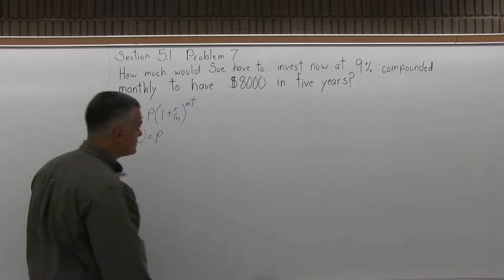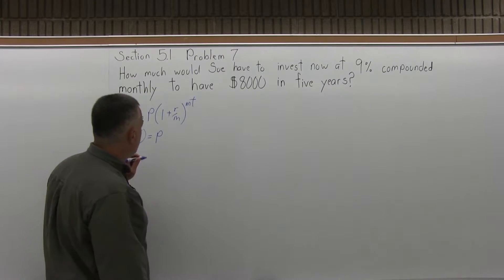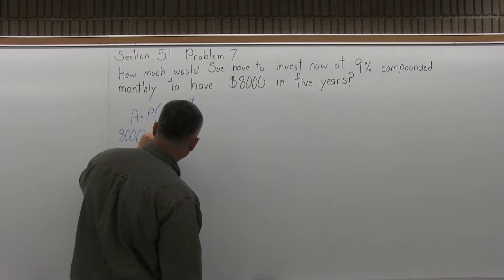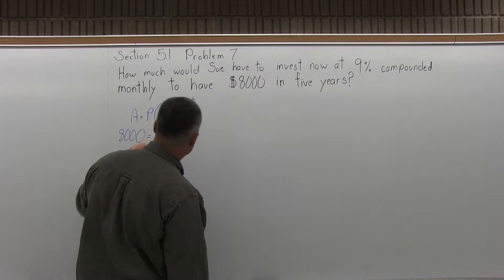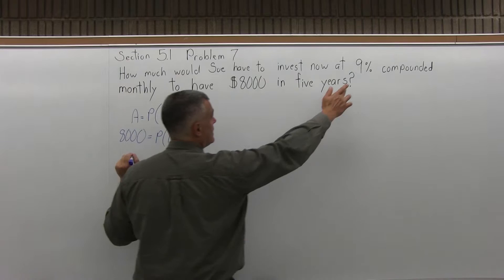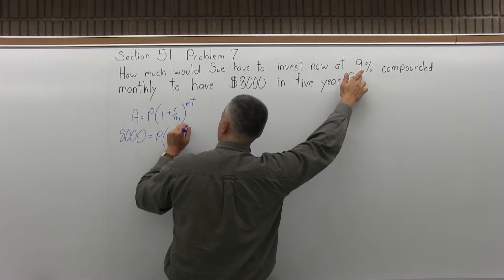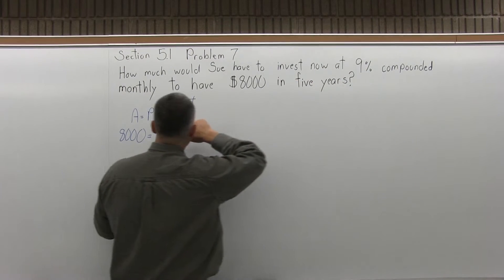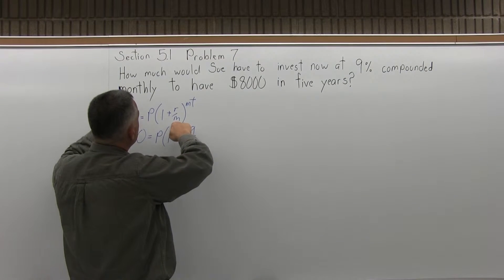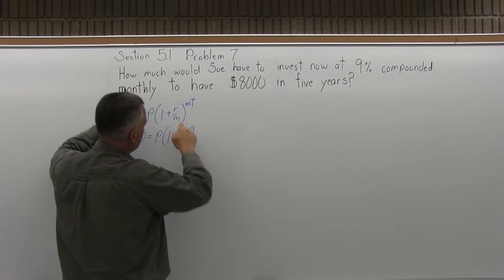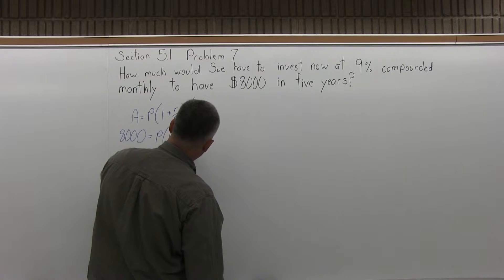A equals P. That's the unknown, so I'll leave it as a variable. Then in parentheses, 1 plus R over M is going to be 1 plus R, the rate as a decimal. The 9% is .09. The M, number of times compounded per year, because I have monthly compounding, M is 12. I close the parentheses.